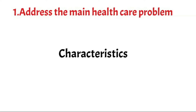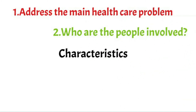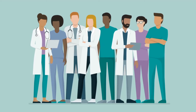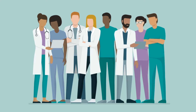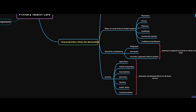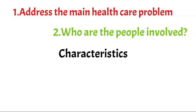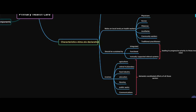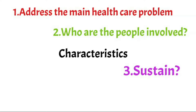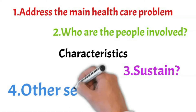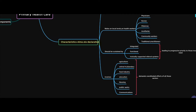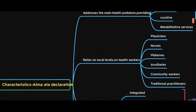The second point speaks about who are the people involved on local levels — doctors, nurses, midwives, and similar health workers. Primary health care relies on these people. The third point is about how you can sustain this entire primary health care system — the keyword here is 'sustain.' The fourth point is about how primary health care also depends on other sectors apart from the health sector.